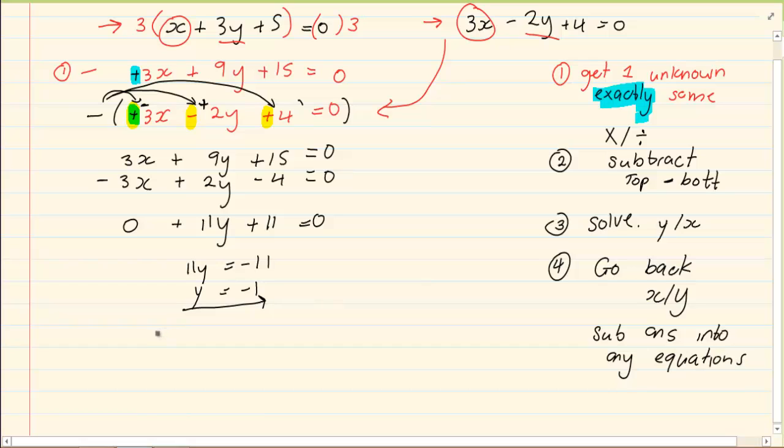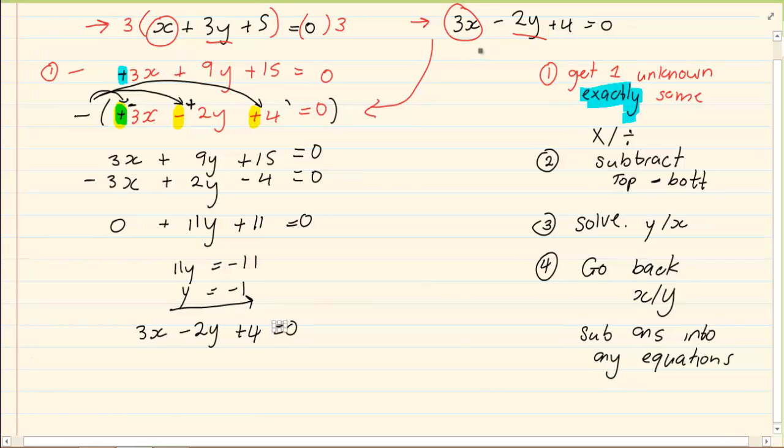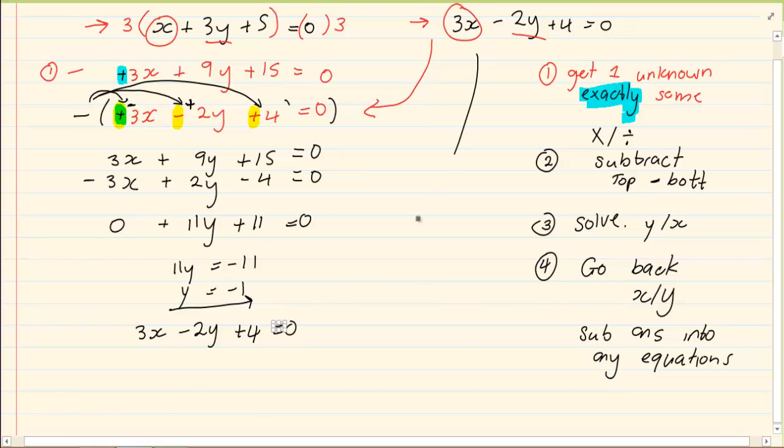So if I take 3x minus 2y plus 4 is equal to 0, I am taking the original equation. And I am substituting my minus 1 in wherever y is. So I have 3x minus 2 into minus 1 plus 4 is equal to 0. Now we are going to solve using our linear equations.